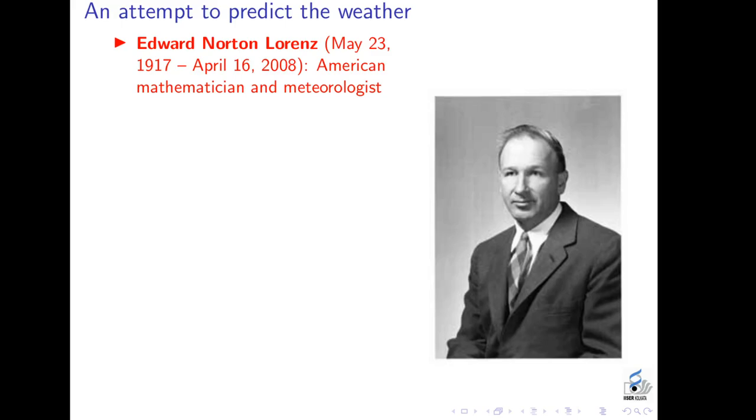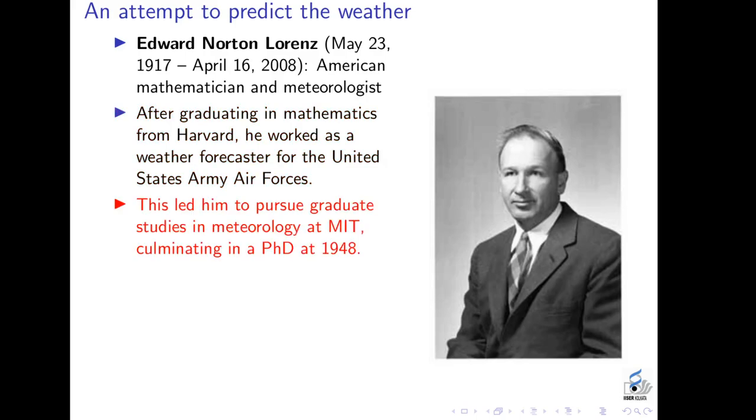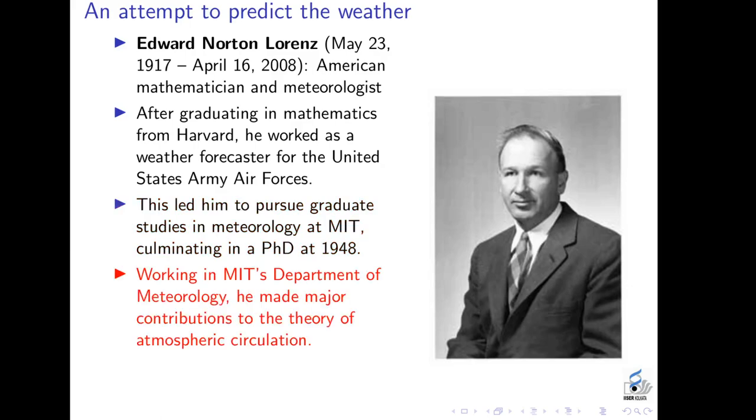All would agree that one person played a rather important role in making chaos, if not a household name, at least a name on the tip of most scientists. This person is Edward Norton Lorenz. He was an American mathematician and meteorologist. The way in which he became a meteorologist is quite interesting. After graduating in mathematics from Harvard, he joined the United States Army for the war. And there, he was part of the Army Air Forces. His role was that of a weatherman to predict weather for flights. This made him interested in meteorology. After his commission with the Army was over, he joined MIT's meteorology department, got a PhD there, ultimately joined there to work, and started making rather important contributions to the subject.